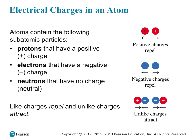Now let's talk about electrical charges in an atom. If we were able to zoom in on a single atom, we would find that it contains subatomic particles — some in the middle and some floating around the edges. Protons have a positive charge. Electrons have a negative charge. And neutrons have no charge, so they're neutral.